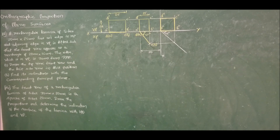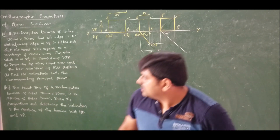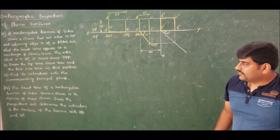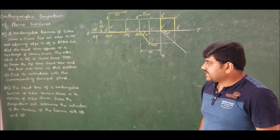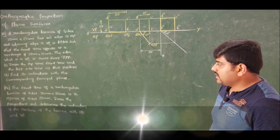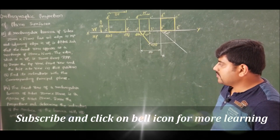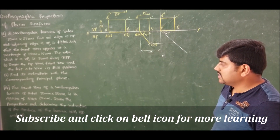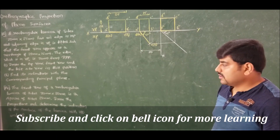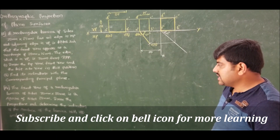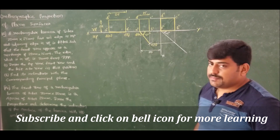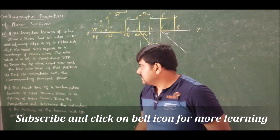Now moving on to problem number 14. The front view of a rectangular lamina of sides 30 mm × 20 mm is a square of sides 20 mm. Draw the projection and determine the inclination of the surface of the lamina with HP and VP.